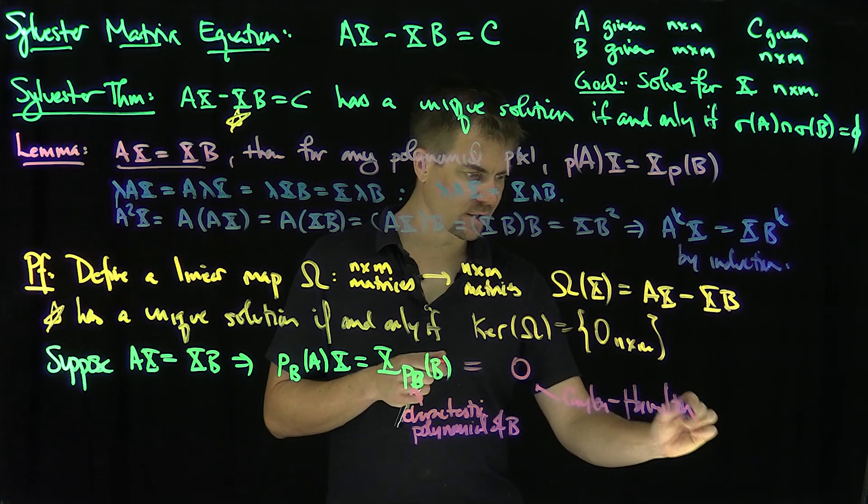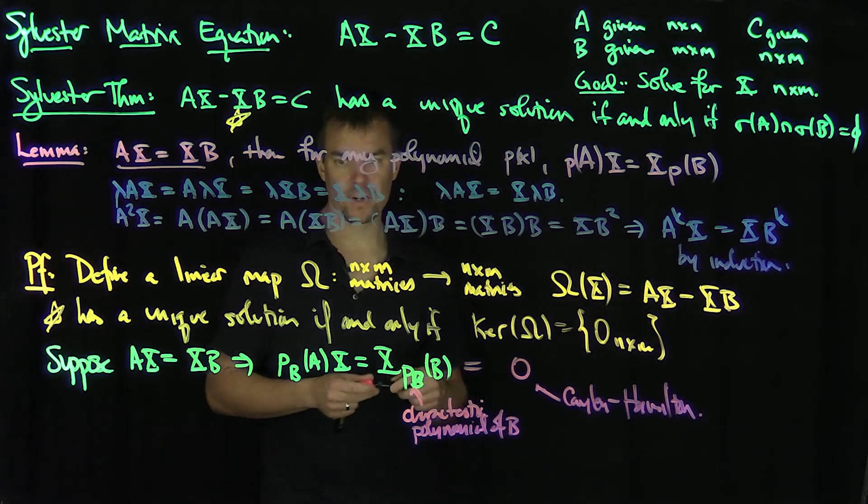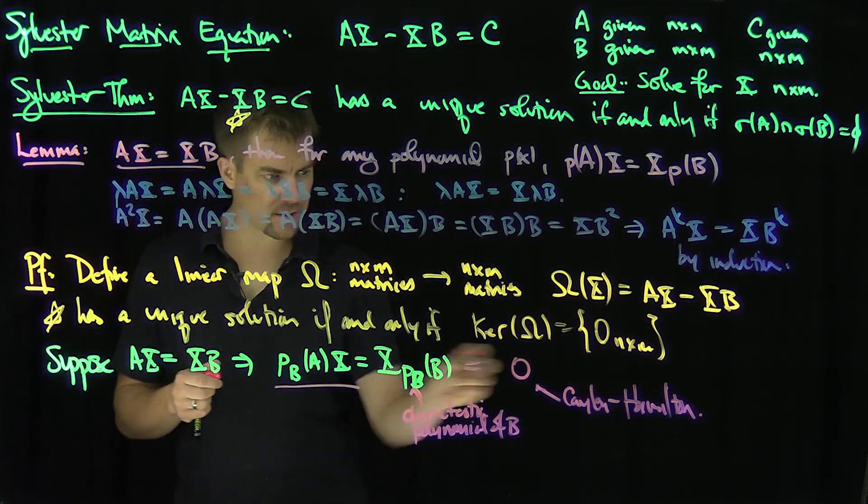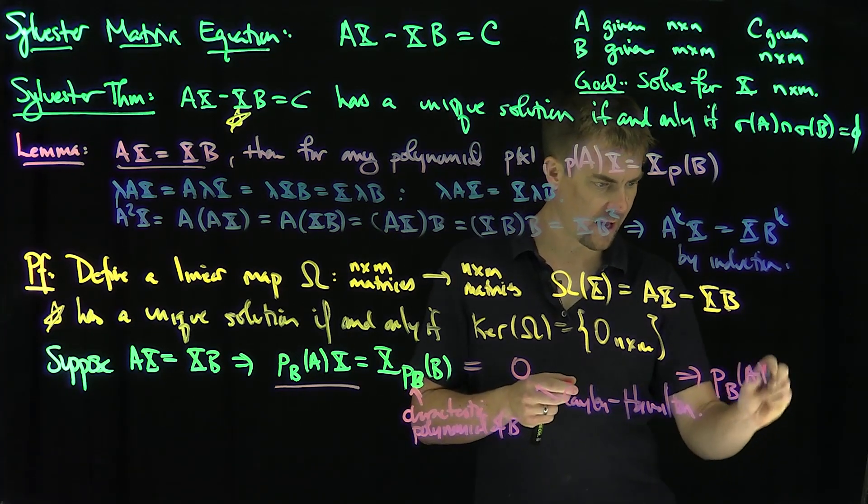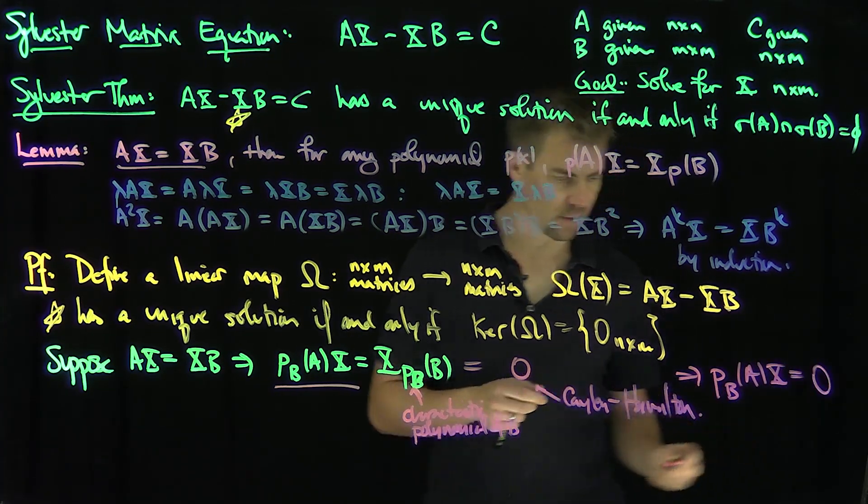If I input the matrix into its characteristic polynomial, I get zero. That's the Cayley-Hamilton theorem. So now I have p_B(A)X equals the zero matrix. This implies p_B(A)X is the zero matrix.